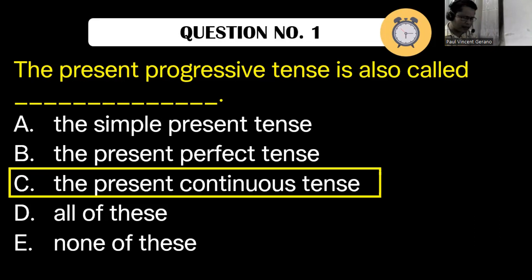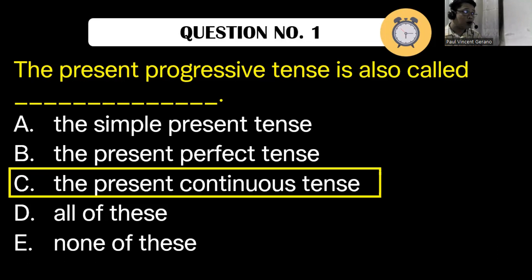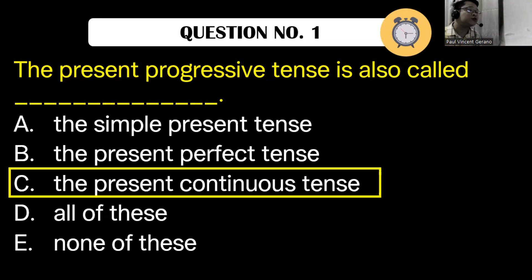Why do we have the term 'present progressive tense' and another term 'present continuous tense'? In American English, the term used is 'present progressive.' In British English, the term used is 'present continuous.'